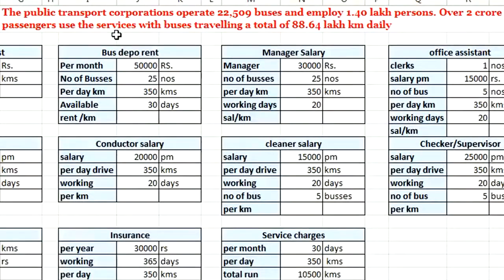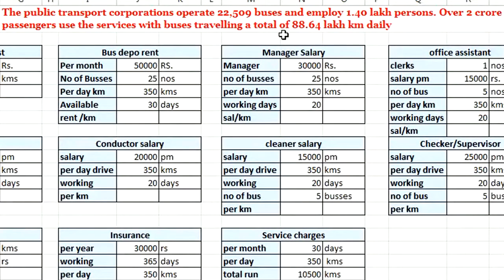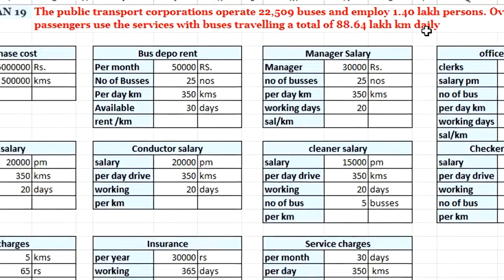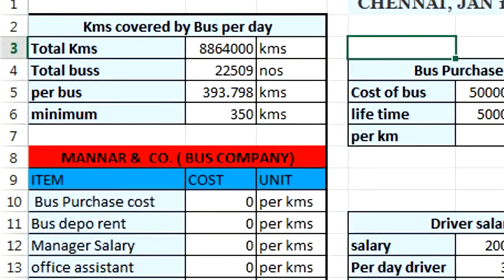This is our typical problem. We have taken data from a newspaper: the public transport corporation operates 22,509 buses and employs 1.4 lakh persons. Over 2 crore passengers use the service, while buses travel a total of 88.64 lakh kilometers daily. Based on this data, let us derive a formula to calculate how to fix the price of a ticket.